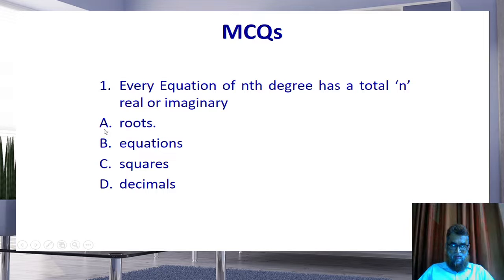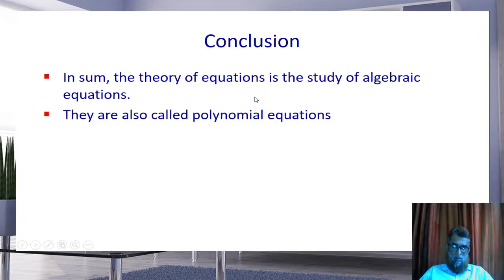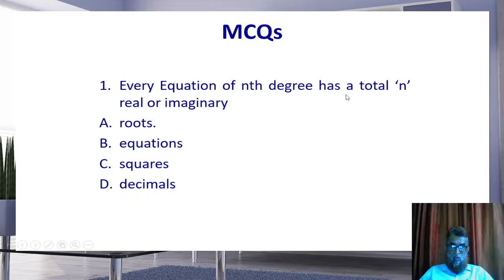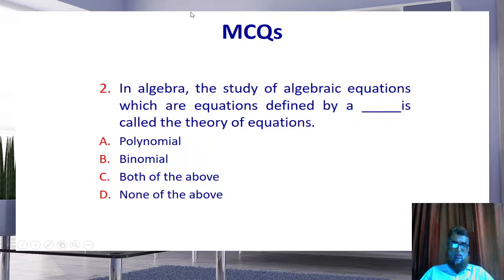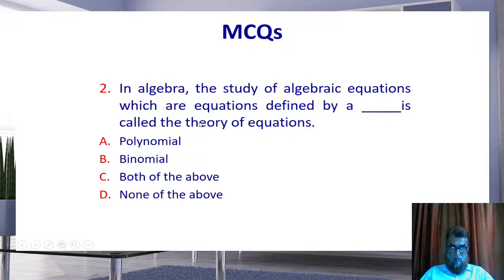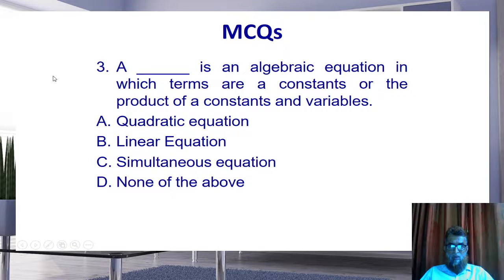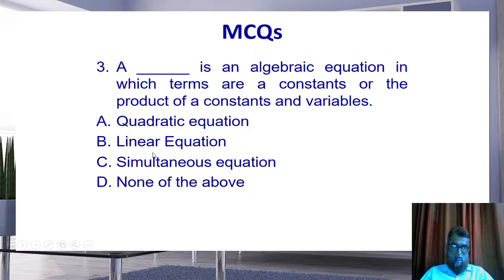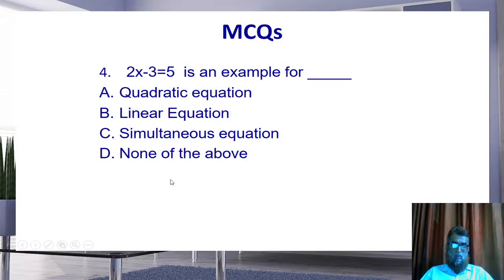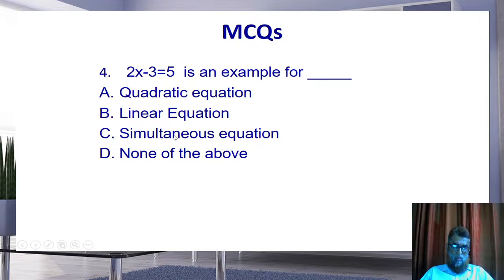From this session, here are some MCQs — multiple choice questions. First: Every equation of nth degree has a total of n real or imaginary blank. Options: roots, equations, squares, decimals. Second: In algebra, the study of algebraic equations which are equations defined by a blank is called the theory of equations. Options: polynomial, binomial, both of the above, none of the above. Third: A blank is an algebraic equation in which terms are a constant or the product of constants and variables. Options: quadratic, linear, simultaneous, none of the above. Fourth: 2x minus 3 is equal to y is an example of which type of equation? Options: quadratic, linear, simultaneous, none of the above.